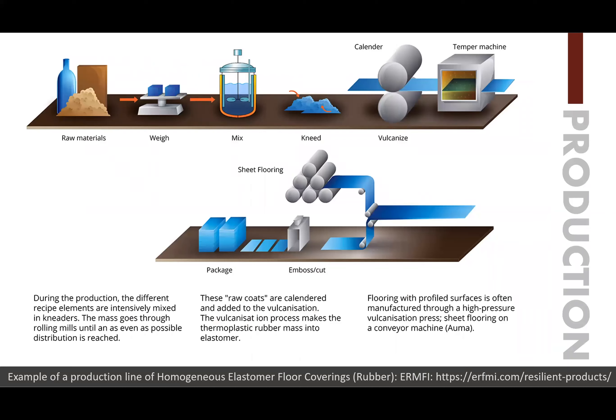This production line shows how rubber flooring is made. It is a calendared product and is vulcanized through a process that includes adding heat. It is then calendared into sheet flooring, which can be cut into tiles if it's rubber tile, or left in sheet form.